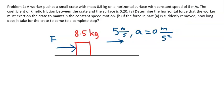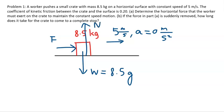Let's label the forces. One of the forces has been labeled for you — that is F. The weight is 8.5 times gravity. Then you have the normal force, which plays an important role in the calculation of friction, and the normal force equals W. Of course, you also have kinetic friction between the surfaces of the box and the floor, labeled F sub K.